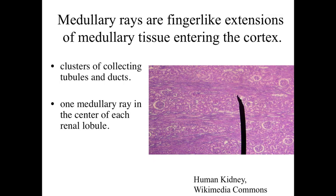The medullary ray is going to be the center of what's referred to as a renal lobule. We talked about renal lobes as an extension of the pyramid. The renal lobules are going to be much smaller, and there are going to be many of these within a renal lobe. The renal lobule is going to consist of those central medullary rays — the collecting tubules and ducts — and then all of the renal corpuscles and the proximal and distal tubules that drain into that region.